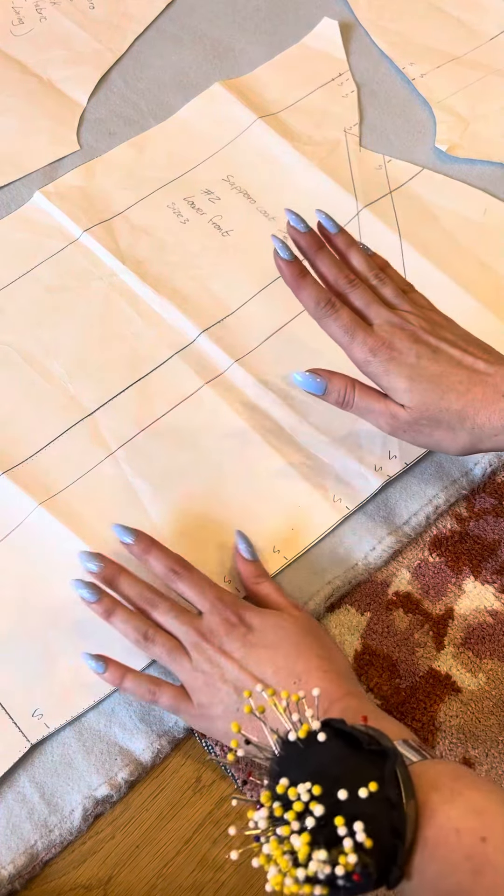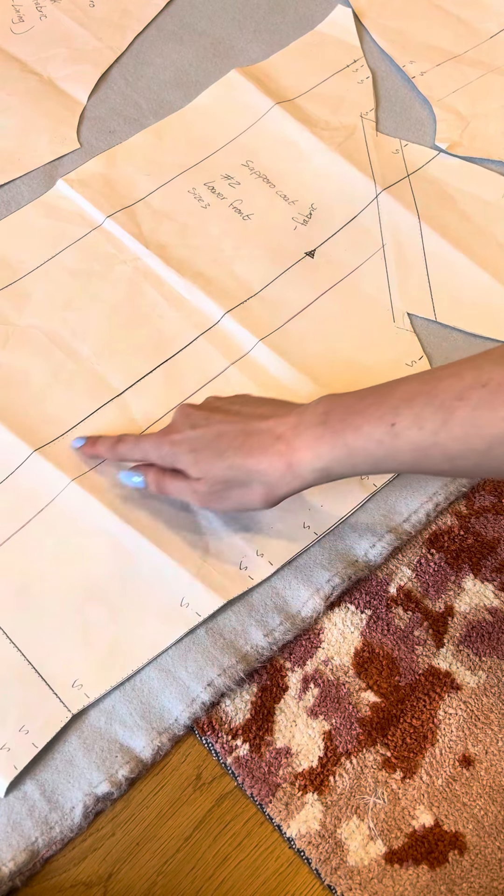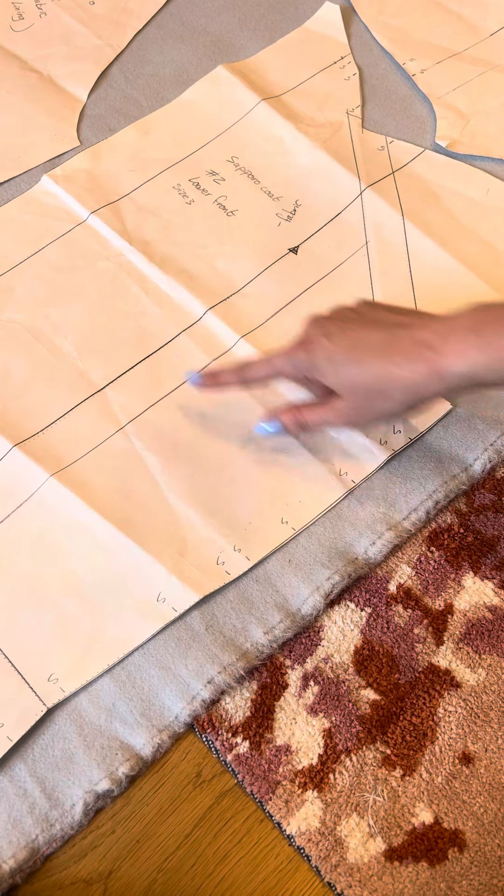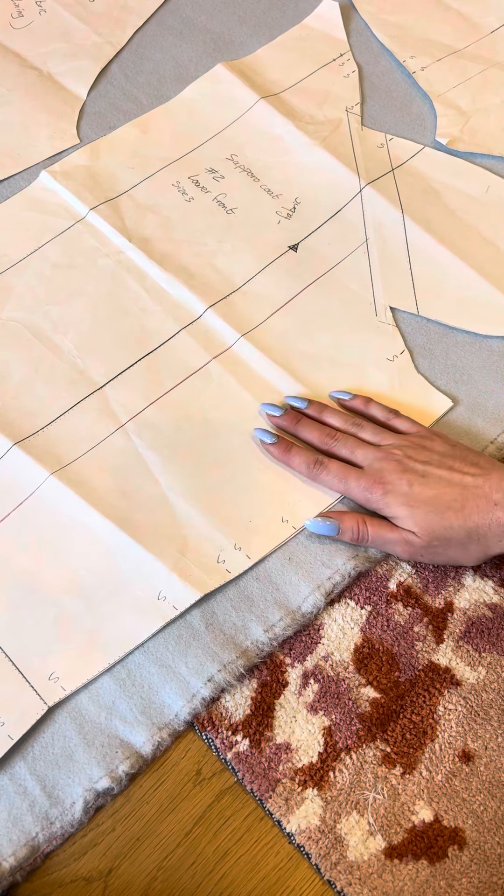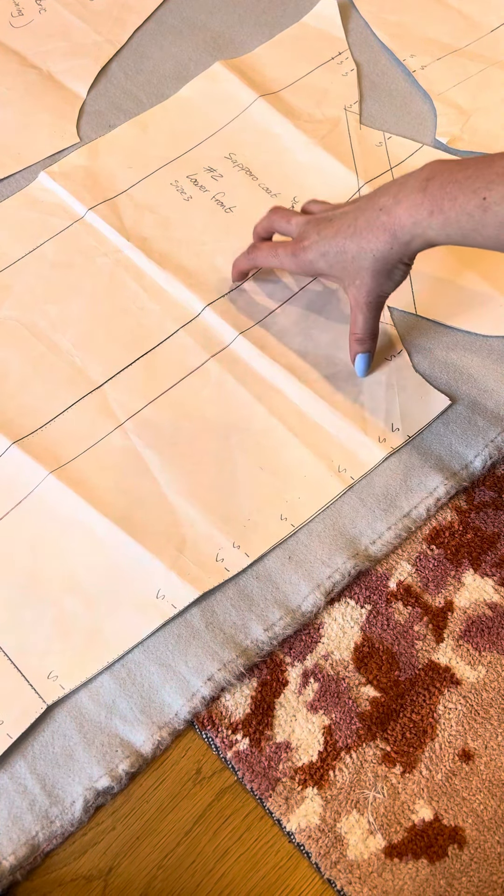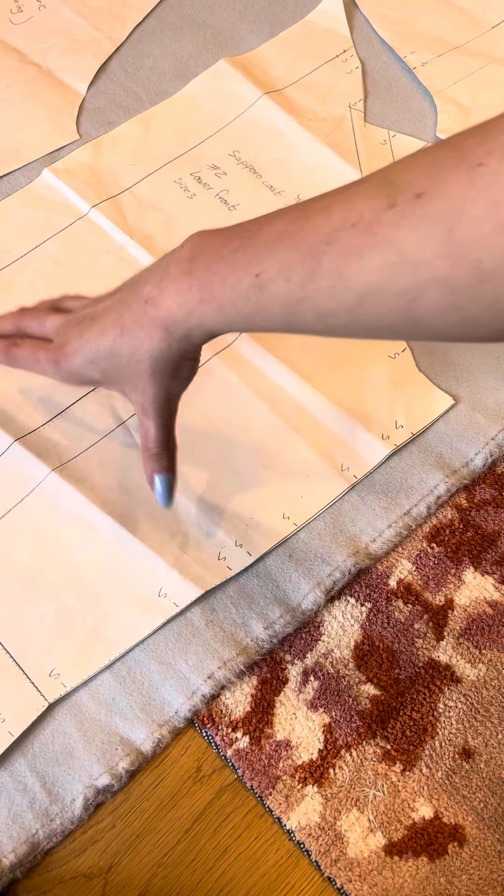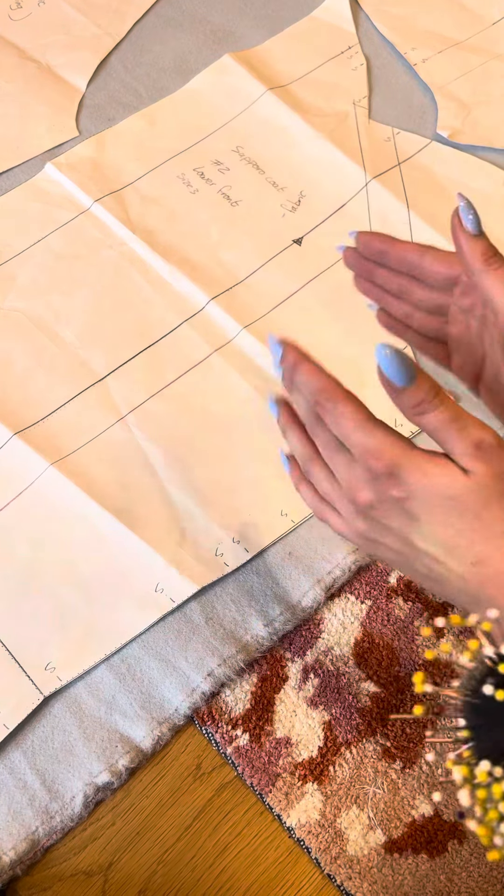Here you can see I've got my pattern piece on my fabric, and this grain line here we want to be parallel to the selvage of the fabric. That's because we want all of the grain lines on the fabric to be running the same way, so when we put our garment on it hangs correctly and we don't have warping in the fabric.